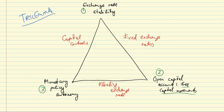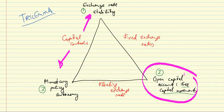As a second example, if we want exchange rate stability and monetary policy autonomy, then we must have capital controls and give up free capital movements. This allows us to use the domestic interest rate to target economic activity and fix the exchange rate, but we do not let capital flow in and out of the country.